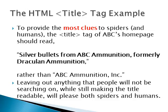Rather than simply reading 'ABC Incorporated,' by reading 'Silver Bullets from ABC Ammunition, formerly Draculan Ammunition,' we've left the most clues for the search engine spider while still making the title readable. Since our main offering is silver bullets, we've put that prominently — meaning first — in the title. And in case somebody used to get their silver bullets from Draculan, we've included 'formerly Draculan Ammunition.' So somebody searching for silver bullets, ABC ammunition, or Draculan ammunition will have a better chance of finding the website.